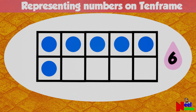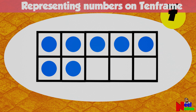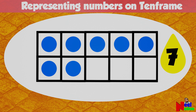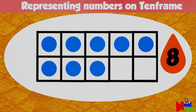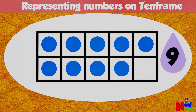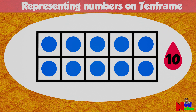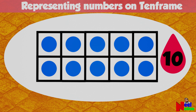The 10 frame shows the number six. The 10 frame shows the number seven. The 10 frame shows the number eight. The 10 frame shows the number nine. The 10 frame shows the number 10. When you fill both the first and second row, you have 10 objects in the 10 frame.